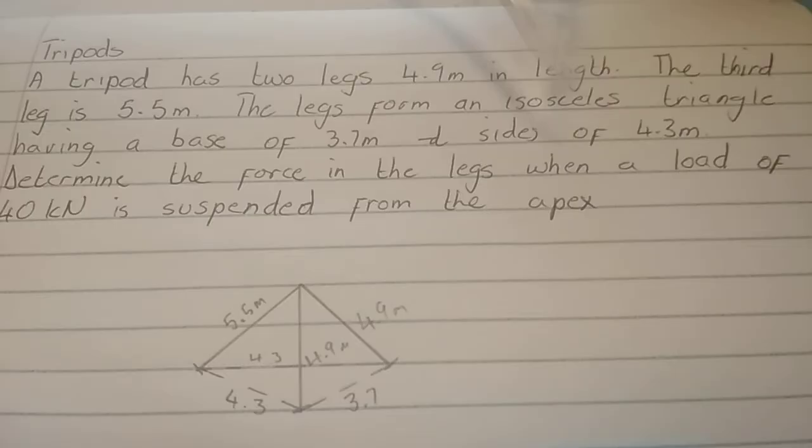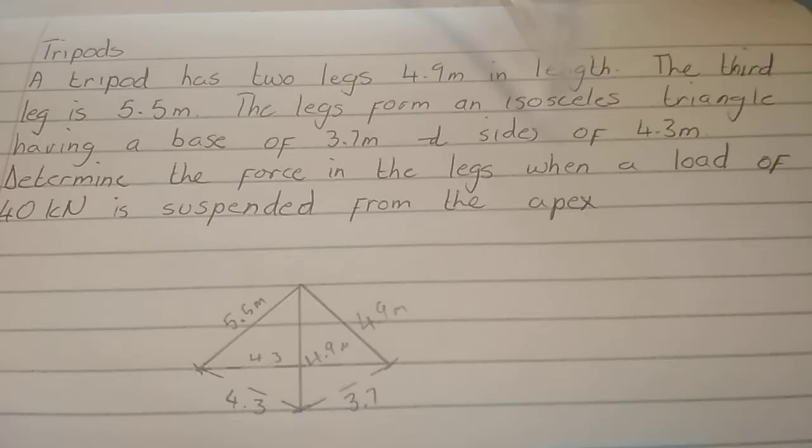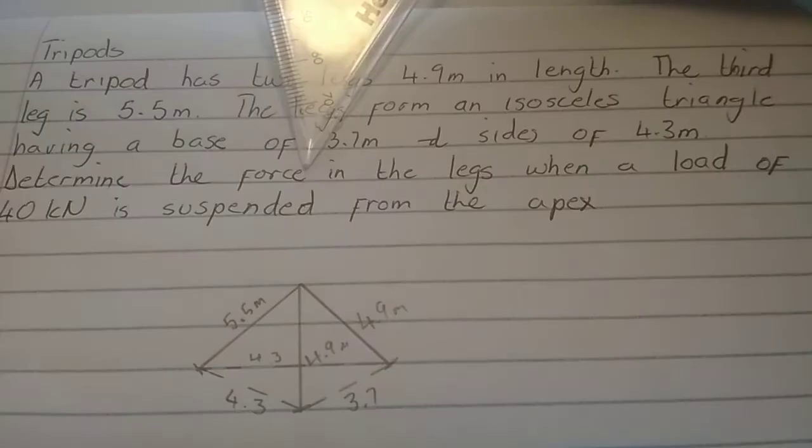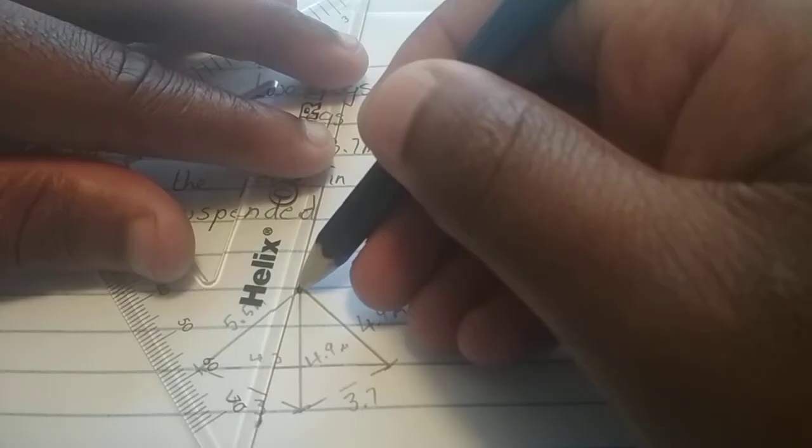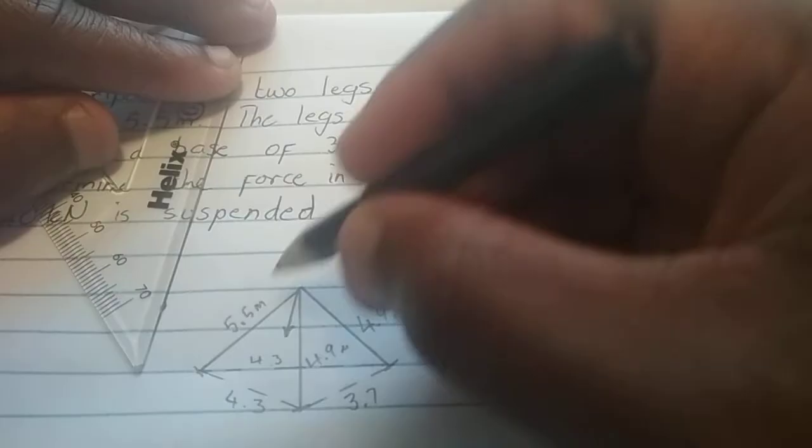Now we have to translate that to a drawing. But anyway, let's read the question. It says, let's determine the force in the legs when a load of 40 kilonewtons is suspended from the apex. So at the apex there, there is a load of 40 kilonewtons.